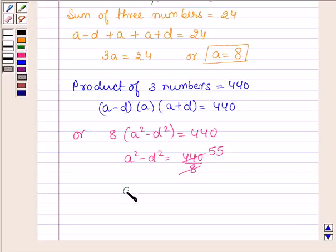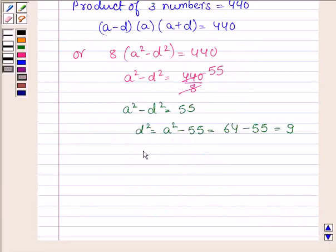Thus, A square minus D square is equal to 55. Or we have D square is equal to A square minus 55, and A is 8, so 64 minus 55, this is equal to 9. So this implies D square is equal to 9, or D is equal to plus minus 3. And since we have supposed that D is greater than 0, so D is equal to 3.